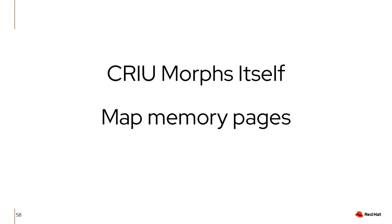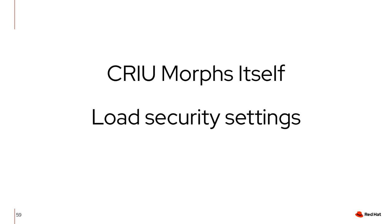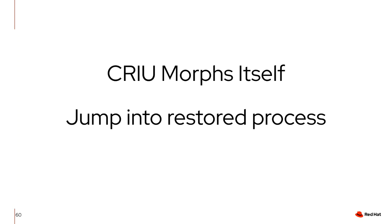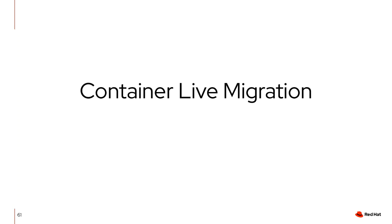In addition to restoring all resources, all memory pages are mapped back at the right location. Then all security settings — AppArmor, SELinux, seccomp — are loaded back, done as late as possible so we are not confined by security mechanisms during restore. Once everything is restored, we jump into the restore process and the process keeps running as it was before checkpointing.